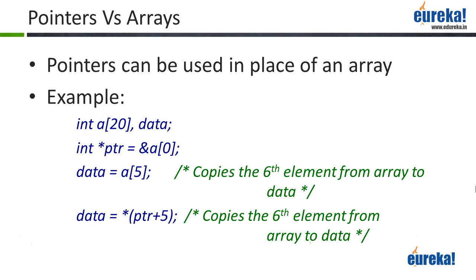So we've now seen how we can use pointers to access elements in an array. There's not much of a difference. With an array you use an index number; with pointers we just do pointer arithmetic. Otherwise it's pretty much the same thing — where you'd say A[5] with an array, with a pointer you'd say ptr plus 5.